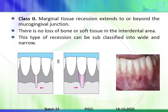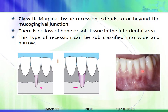Class 2: marginal tissue recession that extends to or beyond the mucogingival junction, and there is no loss of soft tissue or bone in the interdental area. This type of recession can also be narrow or wide. Clinically you can see a narrow soft tissue recession with interdental tissues being intact.